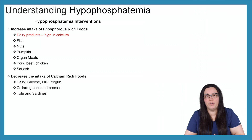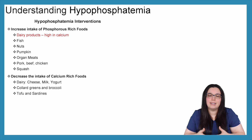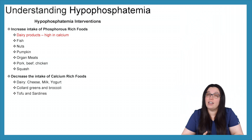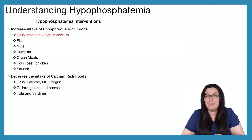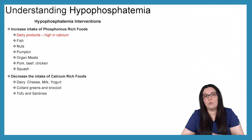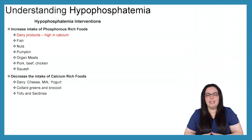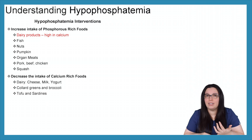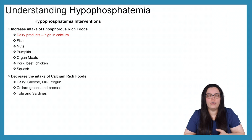Phosphorus-rich foods include dairy products, though dairy is also high in calcium, so depending on how severe the hypophosphatemia is, dairy might not be an option. Additional phosphorus-rich foods include fish, nuts, pumpkin seeds, different organ meats, pork, beef, chicken, and squash. When it comes to calcium-rich foods, we want to decrease those — so dairy products like cheese, milk, and yogurt, as well as collard greens, broccoli, tofu, and sardines.